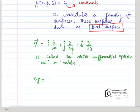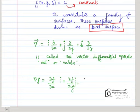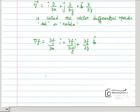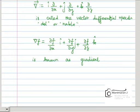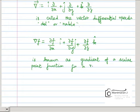Suppose f is a scalar-valued function. Then del f equals ∂f/∂x times i-cap plus ∂f/∂y times j-cap plus ∂f/∂z times k-cap. This is called the gradient of a scalar point function.